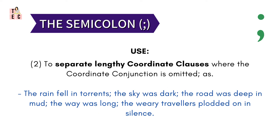Next, semicolon is used to separate lengthy coordinate clauses where the coordinate conjunction is omitted. For example: 'The rain fell in torrents; the sky was dark; the road was deep in mud; the wave was long; the weary travellers plodded on in silence.' Simply because it is massively long, the sentence is separated into clauses with the support of semicolons.